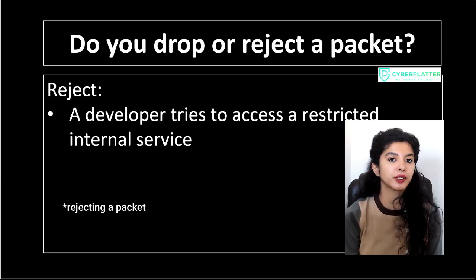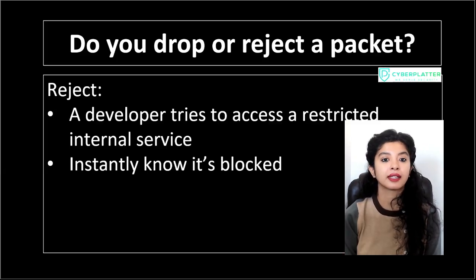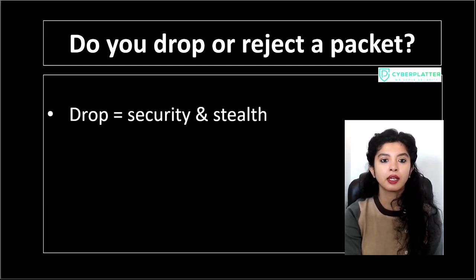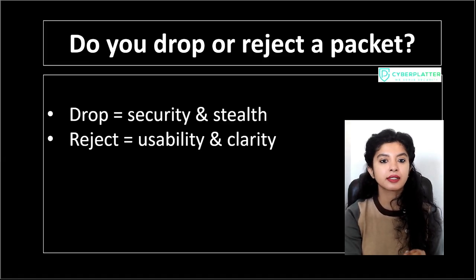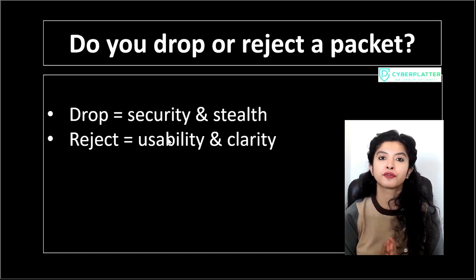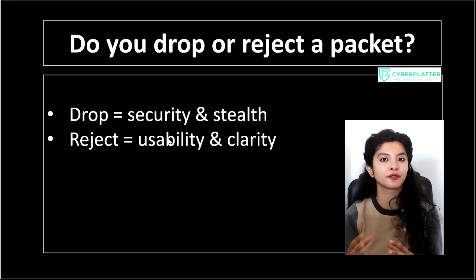Let's consider an example for rejecting a packet. Say a developer tries to access an internal service they are not authorized for. The firewall rejects that packet, and the developer gets an instant message that the access is blocked — no waiting, no confusion, no timeouts. To summarize: drop equals security and stealth; reject equals usability and clarity. You drop for external untrusted networks, and you reject for internal trusted networks where users benefit from quick feedback.